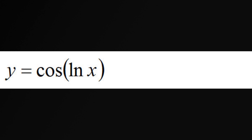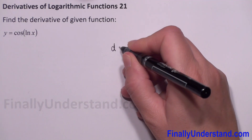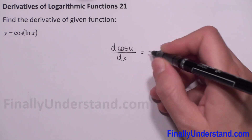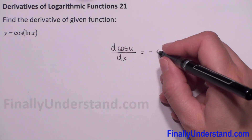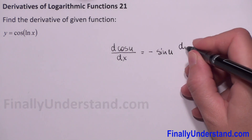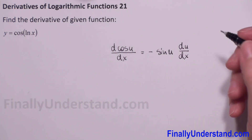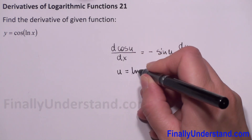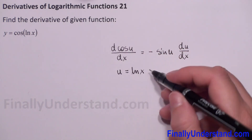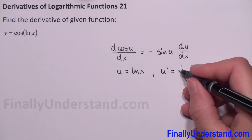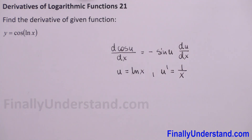To find the derivative of our function, we will use the formula: the derivative of cosine of u with respect to x is equal to negative sine of u times the derivative of u with respect to x. In our case, u is equal to the natural log of x, and the derivative of natural log of x is equal to 1 over x.